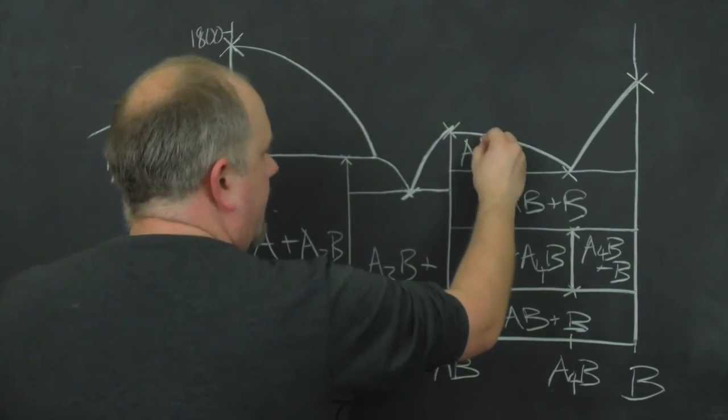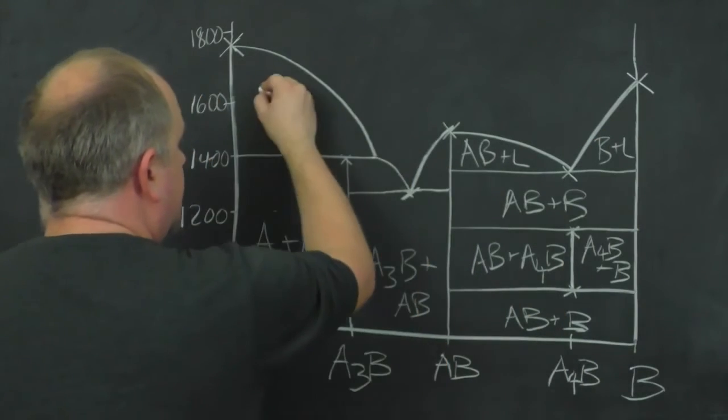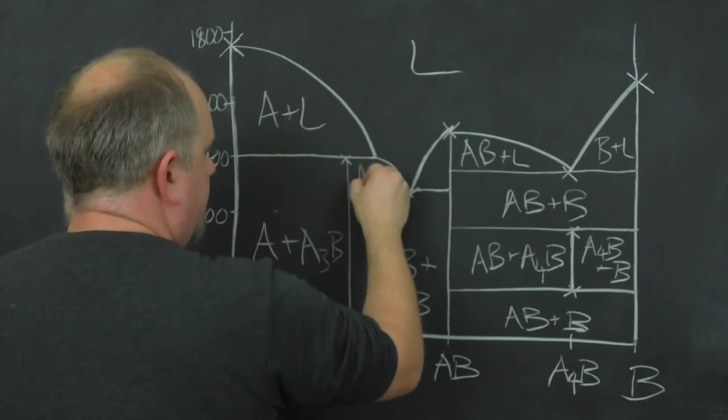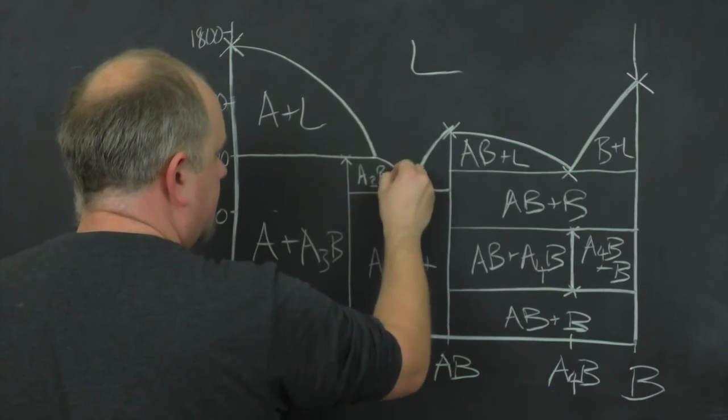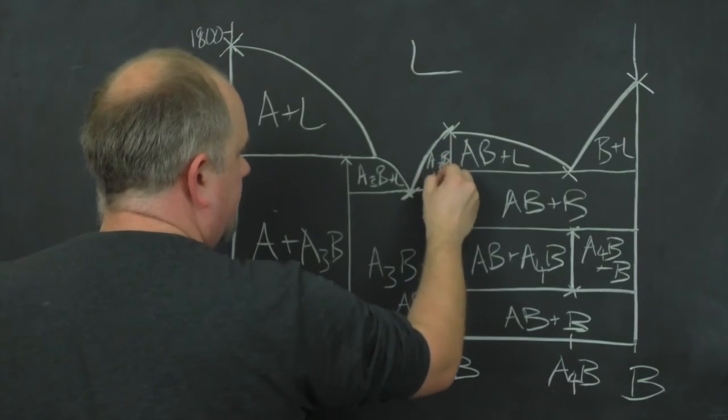Then AB plus liquid, B plus liquid, A plus liquid, liquid at the top, A3B plus liquid here, and the same in here.